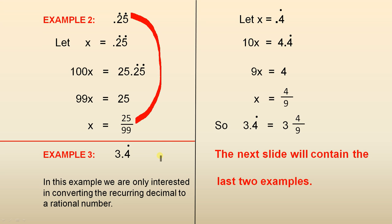The next example is 3.4 recurring. In this example, we are only interested in converting the recurring decimal to a rational number.